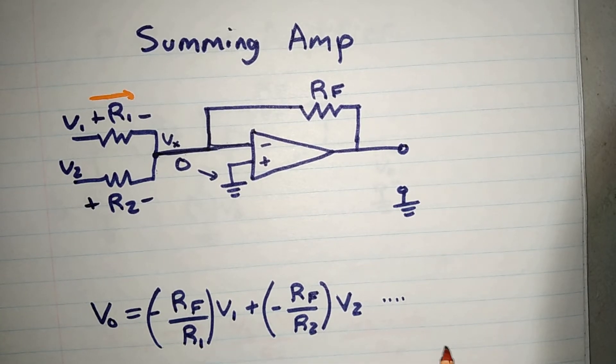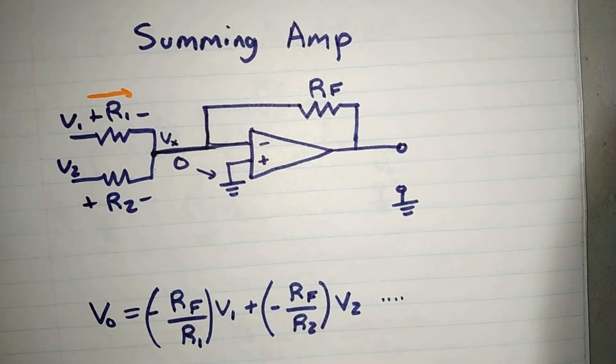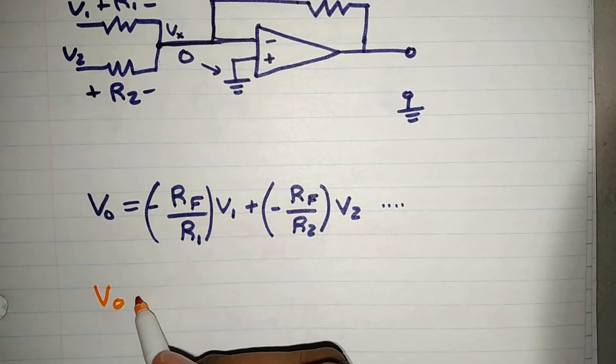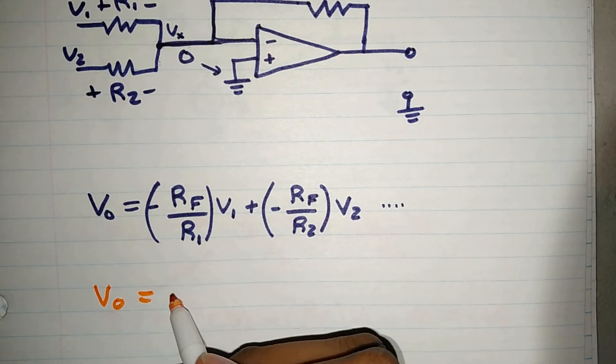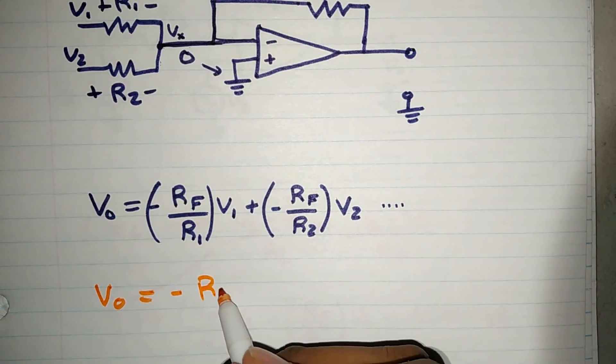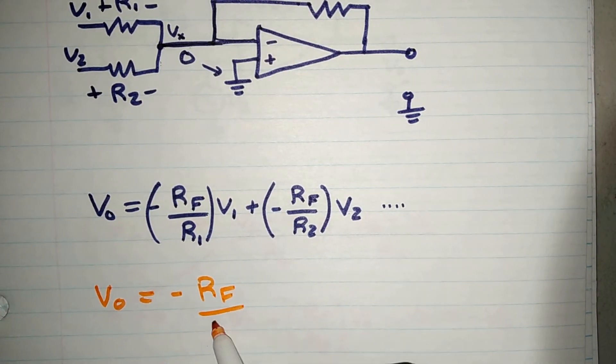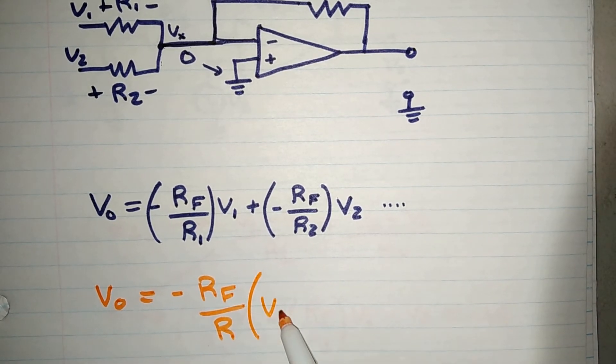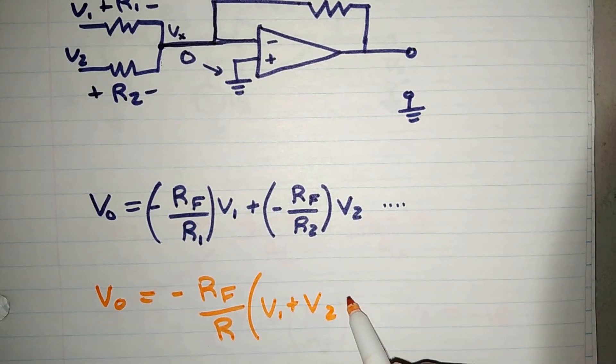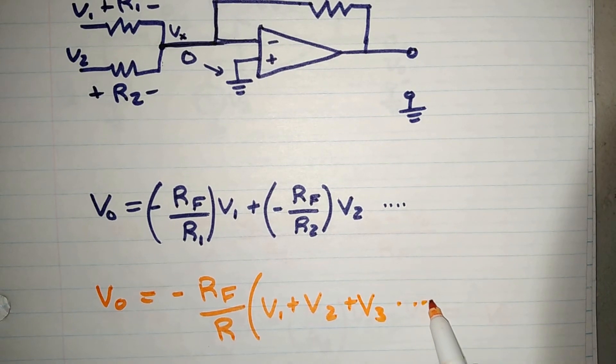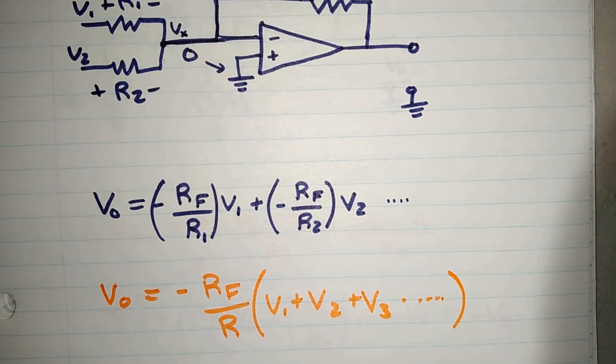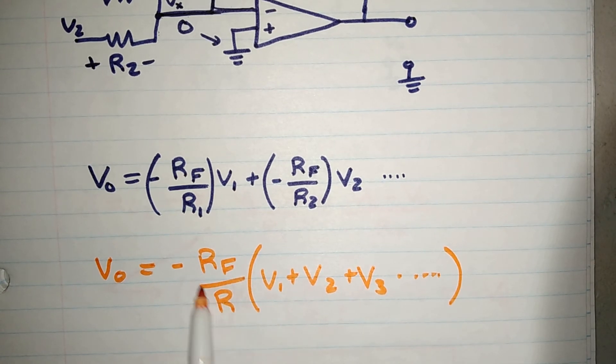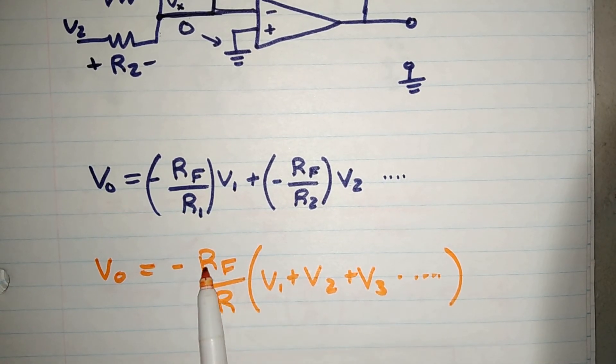If R1, 2, 3, 4, and so on are all the same, then this equation will simplify to Vout is going to equal negative RF over R times V1 plus V2 plus V3 up to Vn. And so if I really wanted the gain to be 1, RF must be equal to R, or the input resistances I put in.